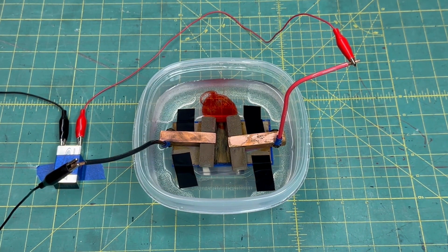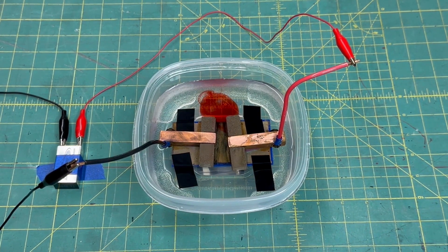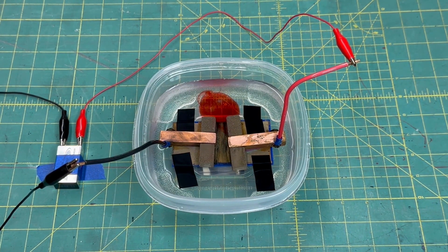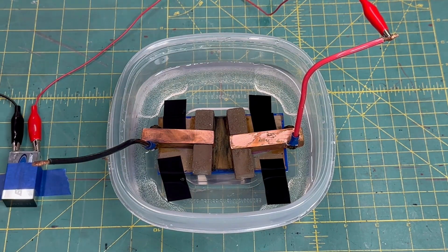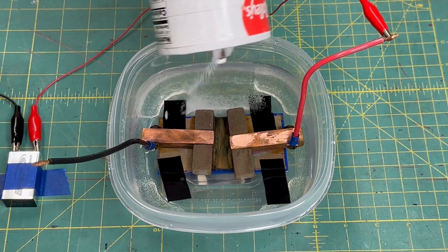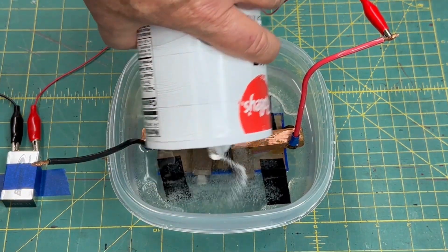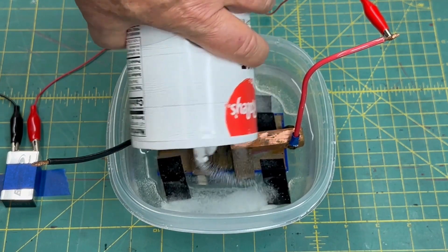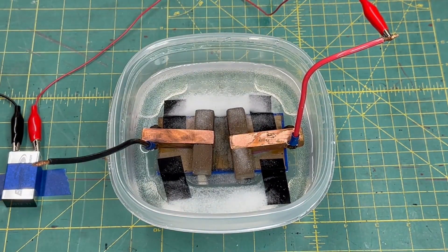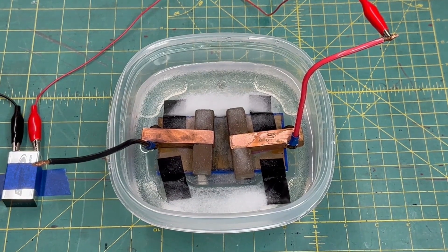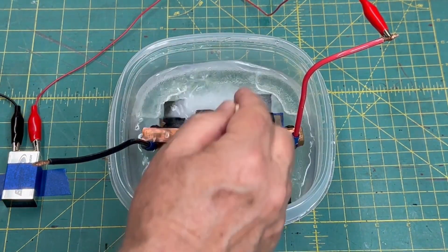We need to add some ions to the water to give it something for the magnets to grab onto. Then we'll start adding some more power. Now we're going to add salt to the water because salt will ionize really well and give a few charged particles, signals for the magnets to clamp onto. So just give it a little stir here.